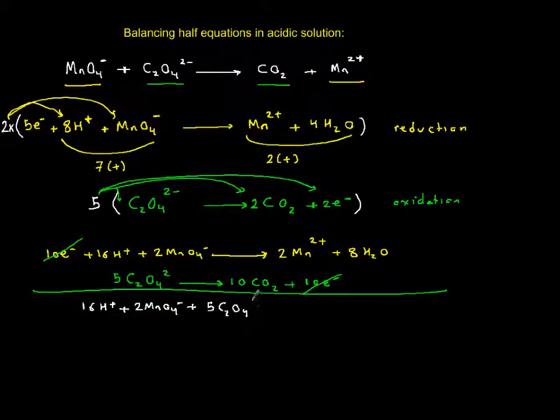So you have 16 hydrogen protons plus 2 permanganate ion plus 5 oxalate ion. On the product side you have 2 Mn^2+ plus 8 H2Os plus 10 CO2. This is the balanced version if I haven't made any mistake.